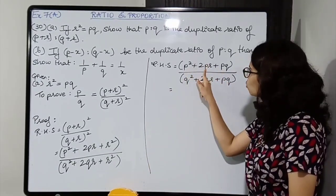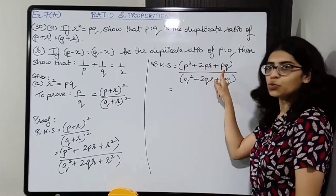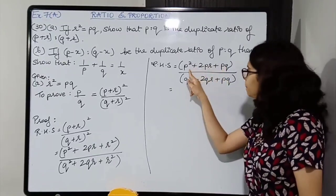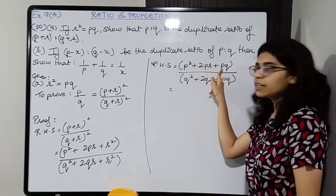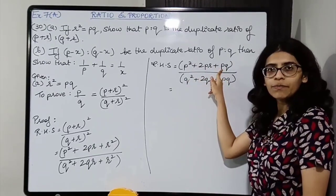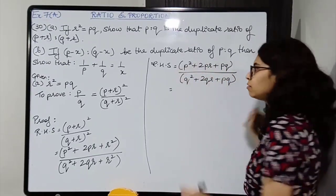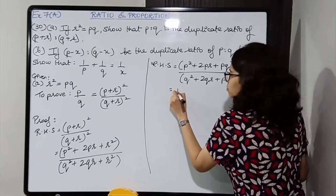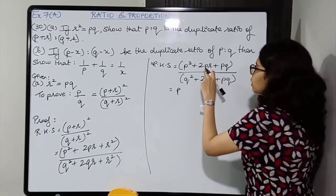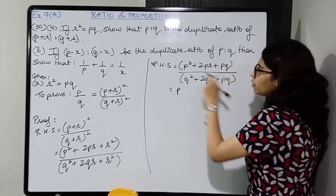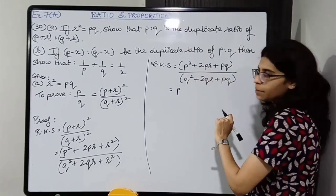This is the LHS. So we proved that RHS equals LHS. Therefore P is to Q is the duplicate ratio of P plus R is to Q plus R. Hence proved.